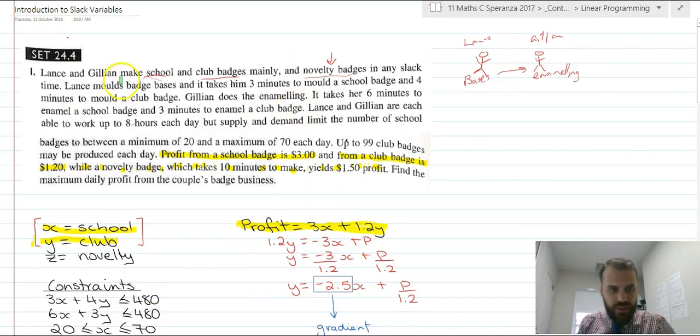Let's take a look at this. It says Lance moulds badge bases, and it takes him three minutes to mold a school badge and four minutes to mould a club badge. And Julian does the enamelling. So Lance moulds badge bases. It takes him three minutes, and it takes him four minutes to mould a club badge.